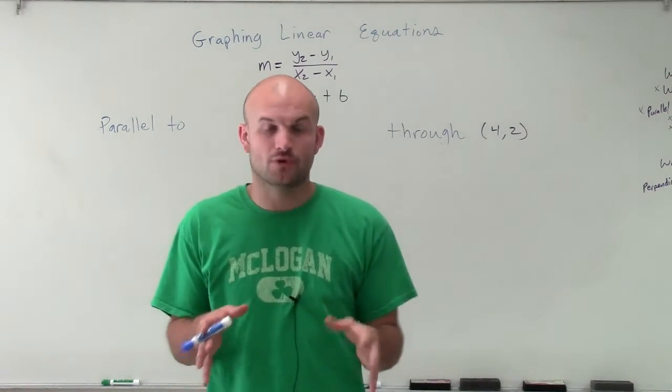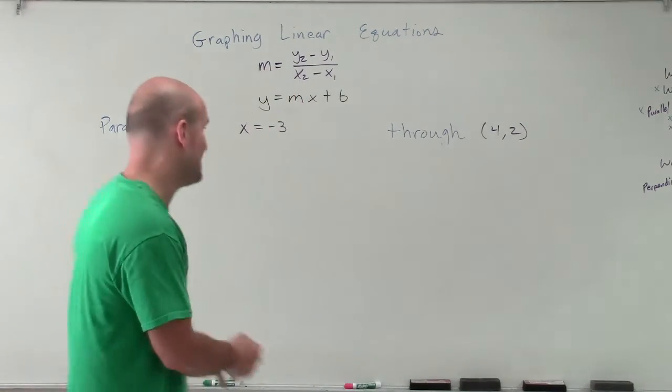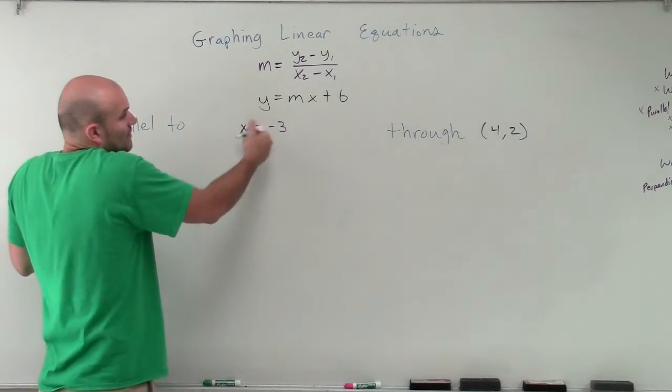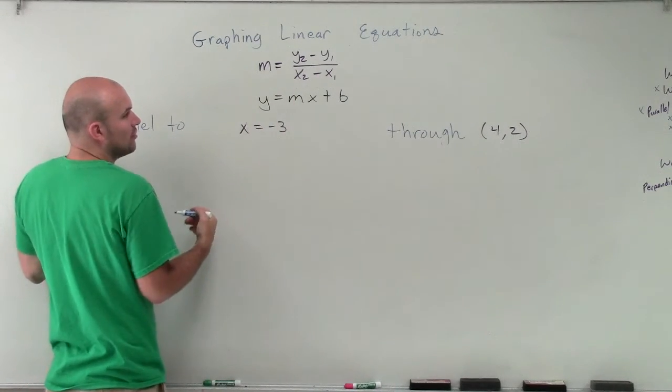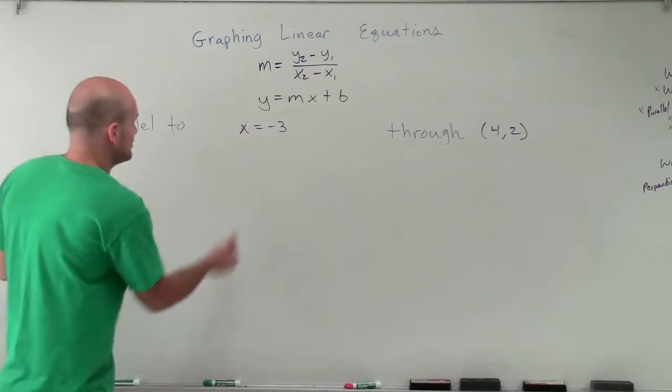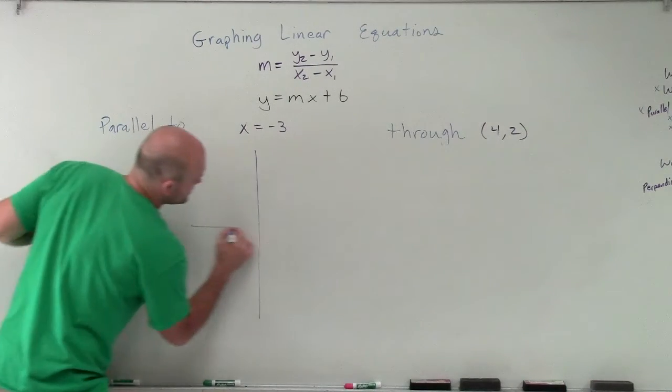And to do that, I'm going to first graph what I have, because I don't have a slope here. We know that since this is not in slope-intercept form, I don't have a y-intercept, nor do I have a slope. And let me show you the graph so you can see why.